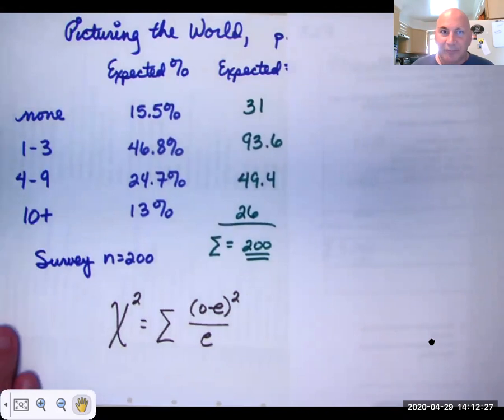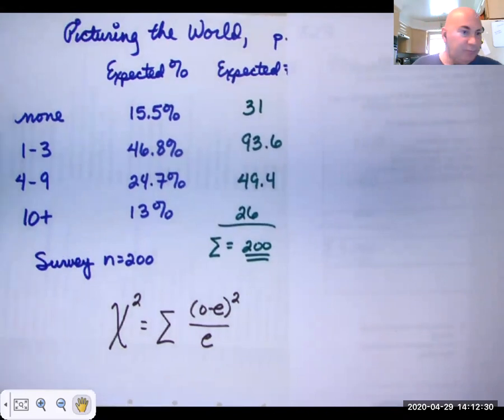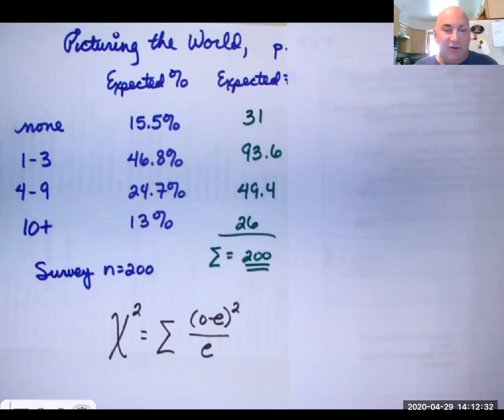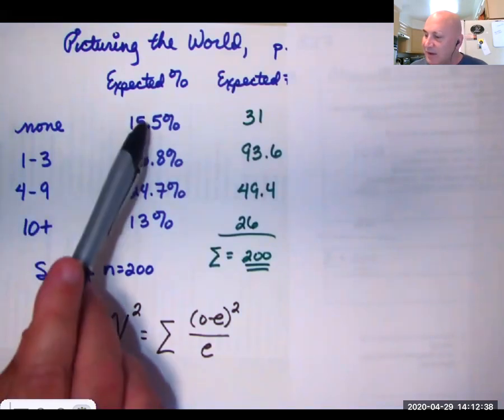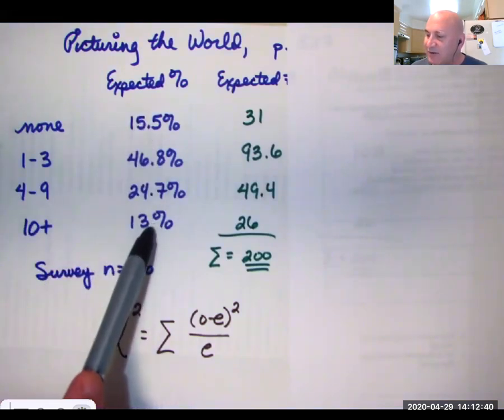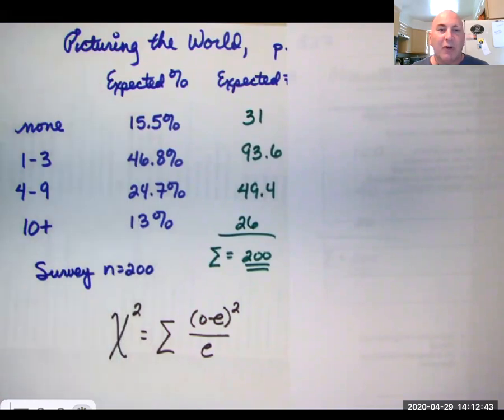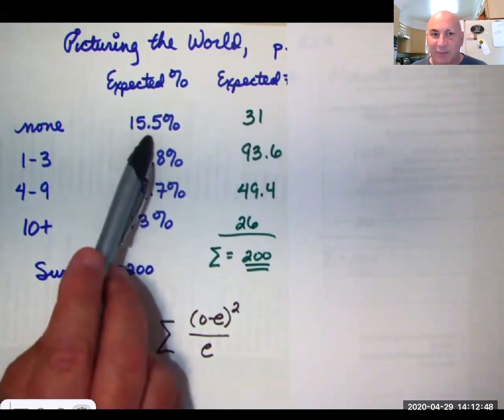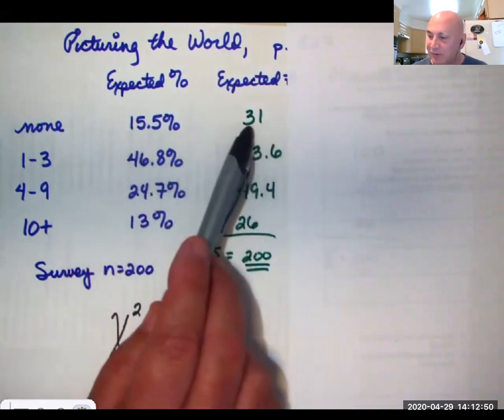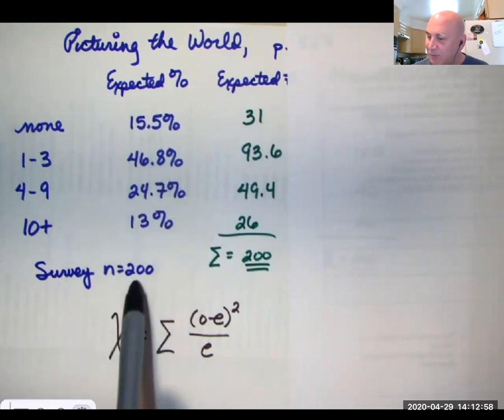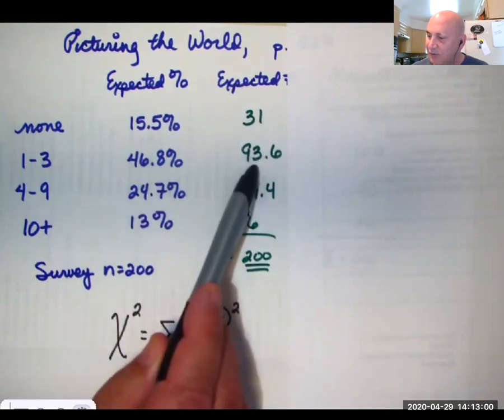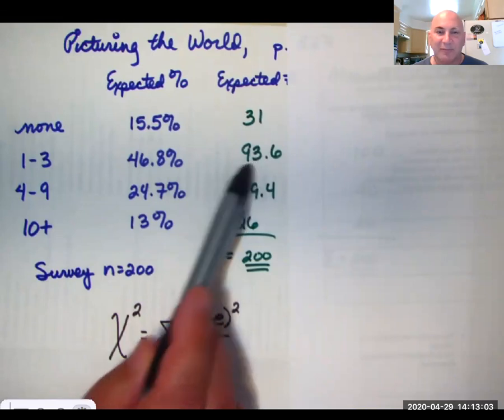So again, here are our categories. And here are our expected percentages. So if we surveyed 200 people, we would expect 15 and a half percent of those 200 people not to have visited the doctor at all. We would expect 46.8 percent of those 200 people to have visited one, two, or three times, etc.